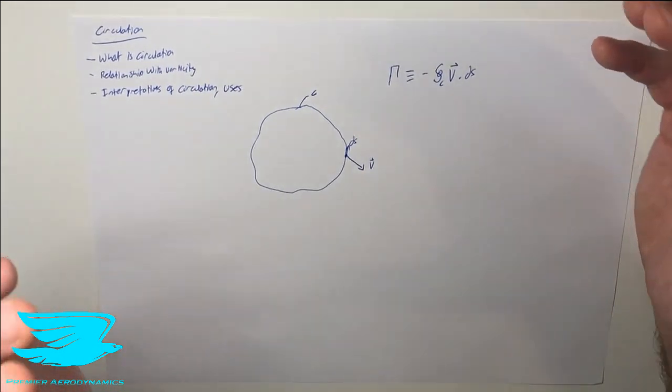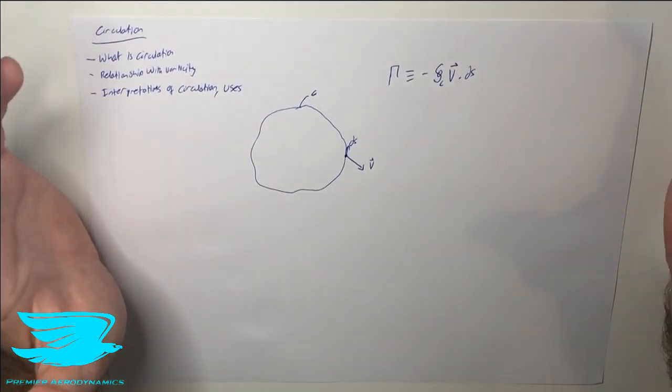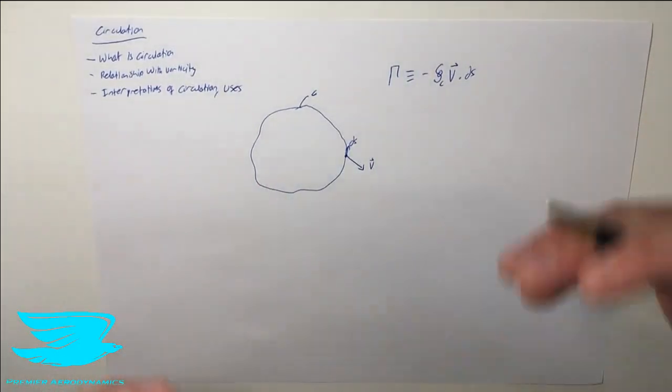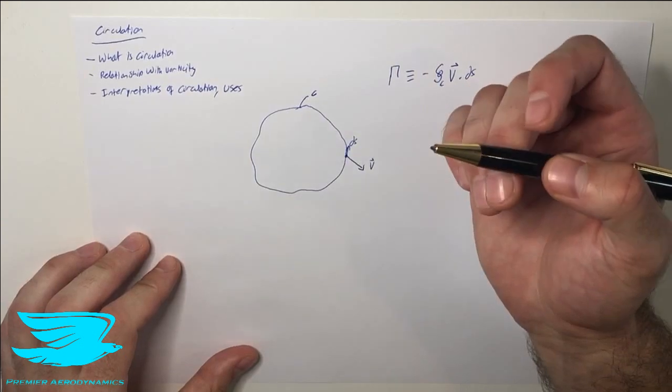And it may seem to you at the moment like what's the point? It's just a regular equation. What does circulation mean? What do we use it for? We'll be getting to this in the third part.